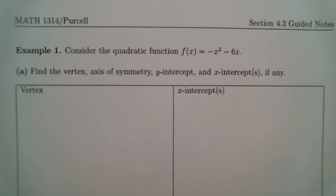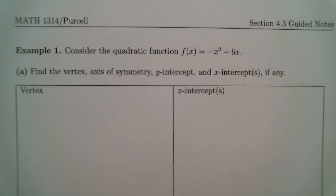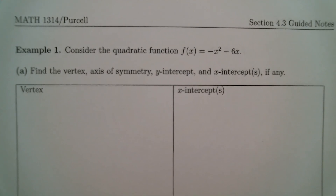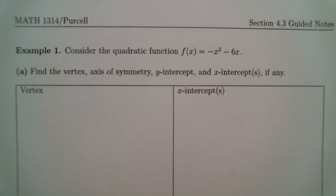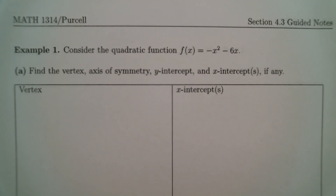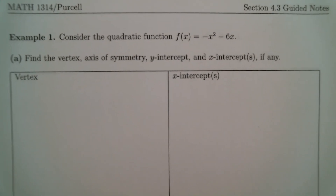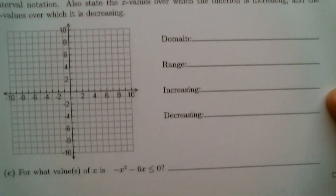The first quadratic function we are going to look at is f of x equals negative x squared minus 6x. This is the layout that I have for these types of problems. I've been known to give a test problem like this with the exact same layout as it is on this page.